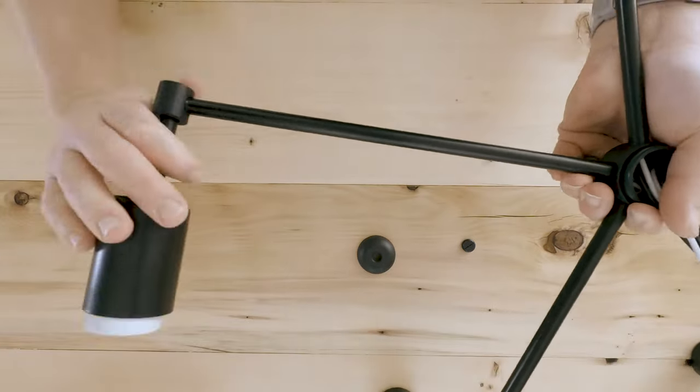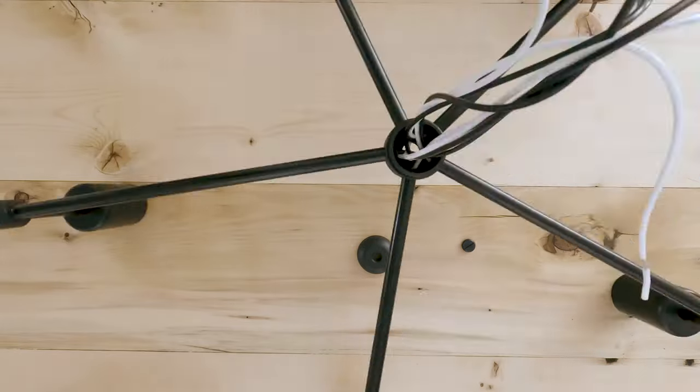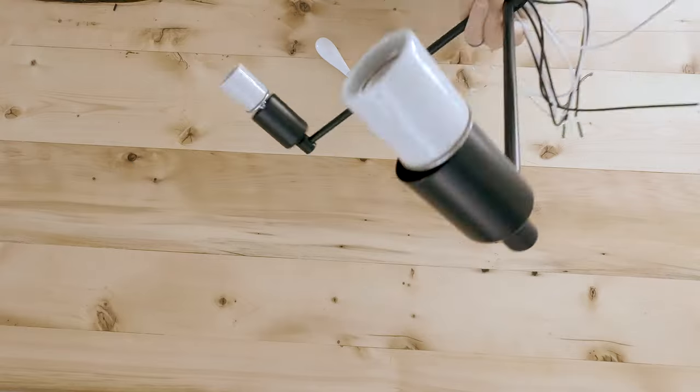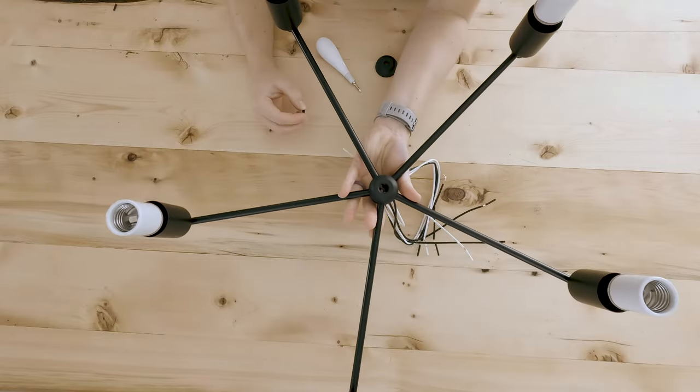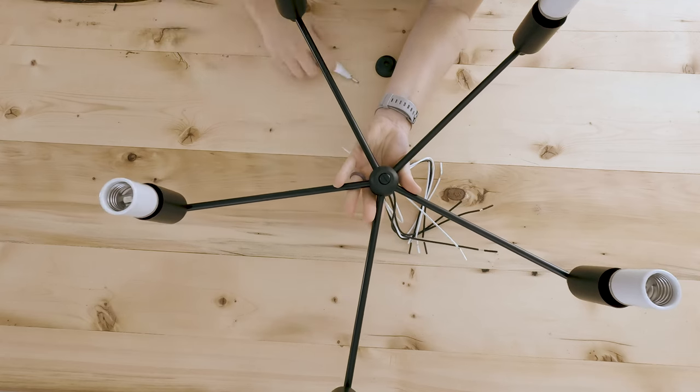After all the arms are attached, tighten the arms until everything is level if placed on a flat surface. Then flip the light upside down to screw on the slotted plug to hide the opening at the bottom of the body.